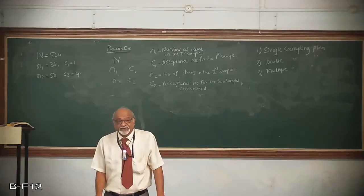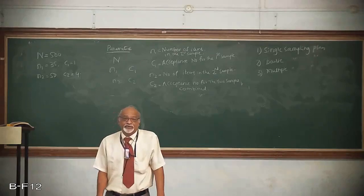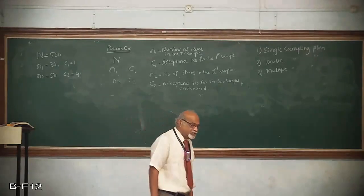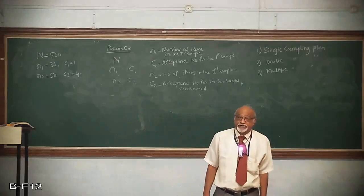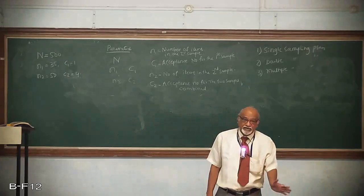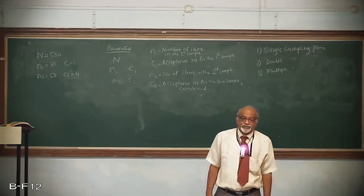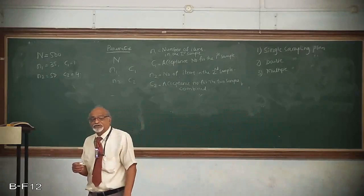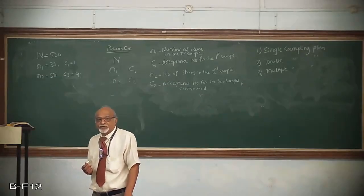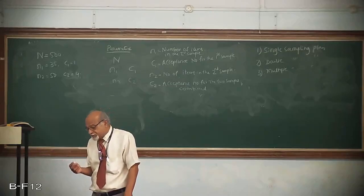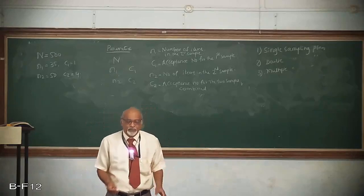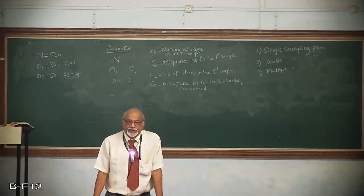In sequential sampling, it is called item-by-item sampling. It is almost similar to the multiple sampling plan, but in sequential sampling, only one item is tested at a time. It will have an acceptance zone, a continuation zone — where you cannot take any decision — and a rejection zone. I can show you only on a graph what the sequential sampling plan looks like.